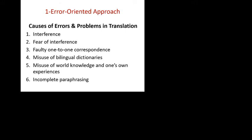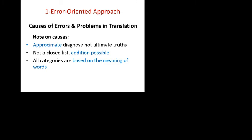Number six is incomplete paraphrasing, and we shall be discussing all these causes in this lecture. A note on the causes: the work of two or three scholars has been cited here in this chapter. These causes are approximate diagnosis, not ultimate tools, and this is not a closed list — addition is possible, but based on research of course. All categories are based on the meaning of words.